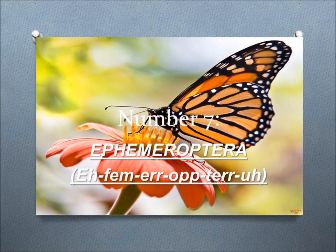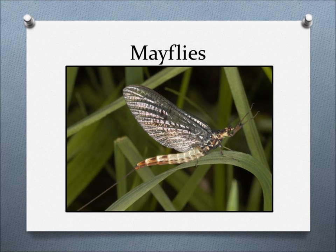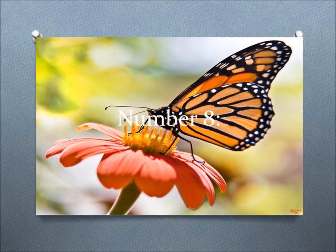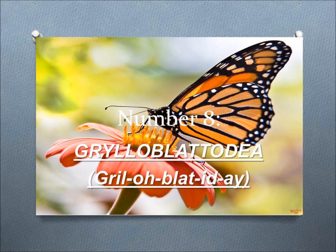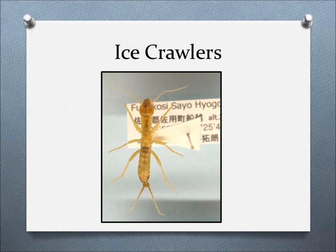Number 7, Ephemeroptera. This order includes mayflies, that come from an ancient lineage. Number 8, Grylloblattodea. This order includes ice crawlers, which are small insects that thrive in near-freezing temperatures.